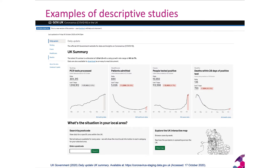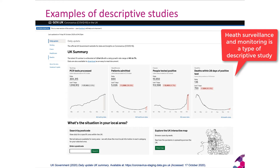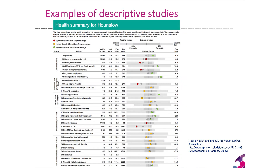A more recent example is the UK's daily statistics and updates on COVID: number of tests processed, patients admitted to hospital, people who tested positive, and deaths within 28 days of a positive test — a kind of health surveillance and monitoring. Another descriptive community health profile at district level, developed by Public Health England, shows indicators like children in poverty, obese adults, smoking prevalence, alcohol-specific hospital stays, breastfeeding initiation, sexually transmitted infections, hip fractures in those aged 65 and over, and mortality rates from cardiovascular disease and cancer.